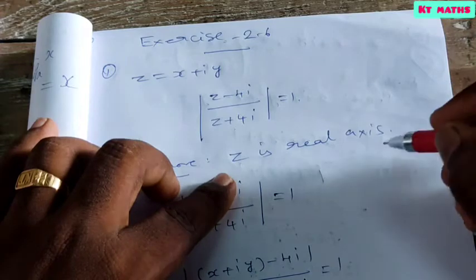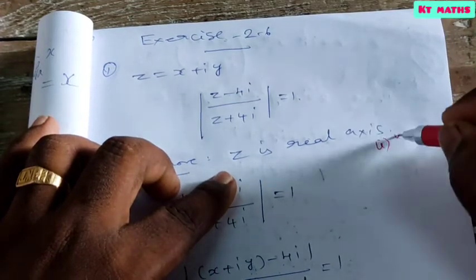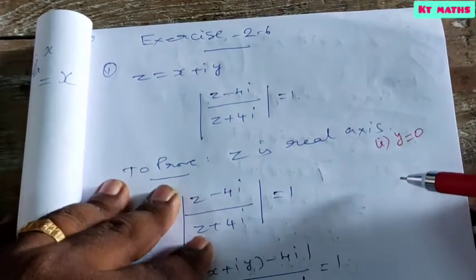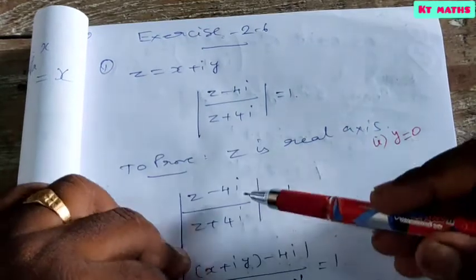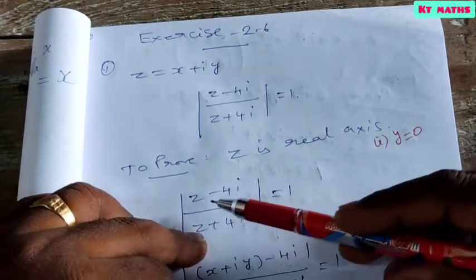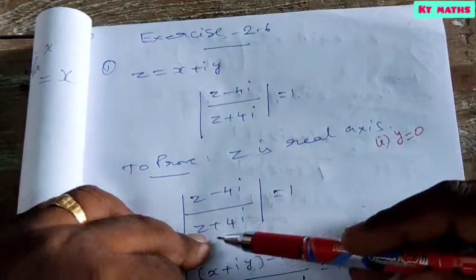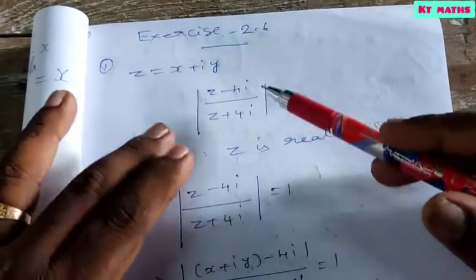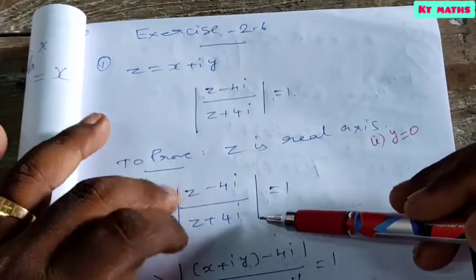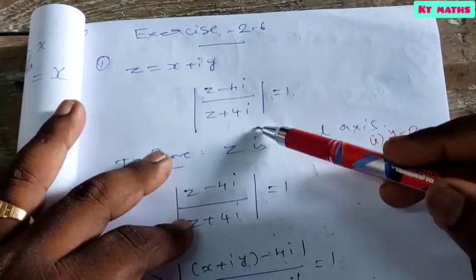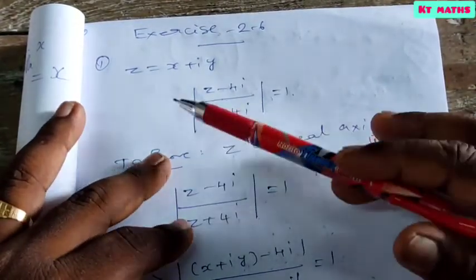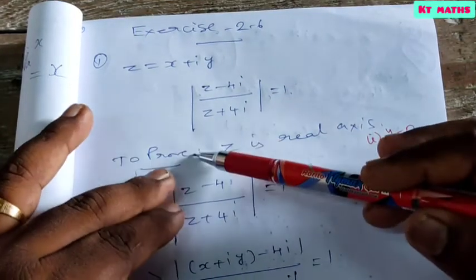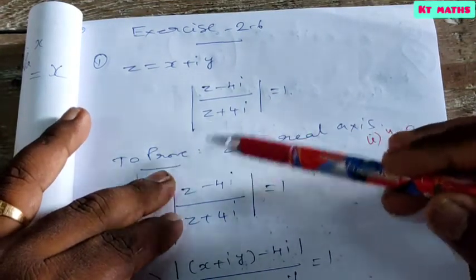To prove z is on the real axis, we have to prove y equals 0. Given modulus of (z minus 4i) by (z plus 4i), we apply the modulus property and substitute z equals x plus iy in rectangular form.